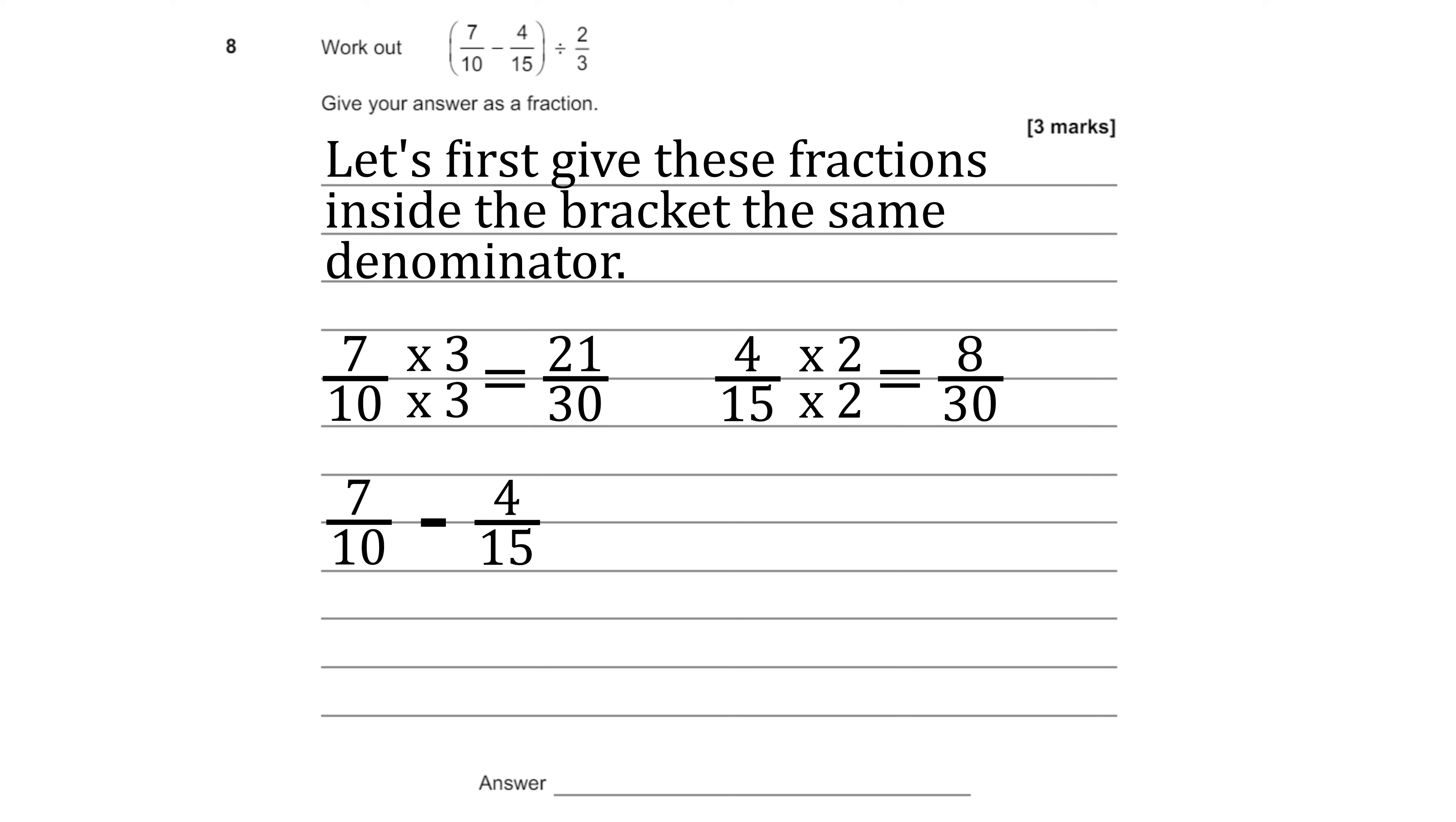We can sub them into that bracket. So 7 over 10 minus 4 over 15 is going to be equal to 21 over 30 minus 8 over 30 and that's equal to 13 over 30.